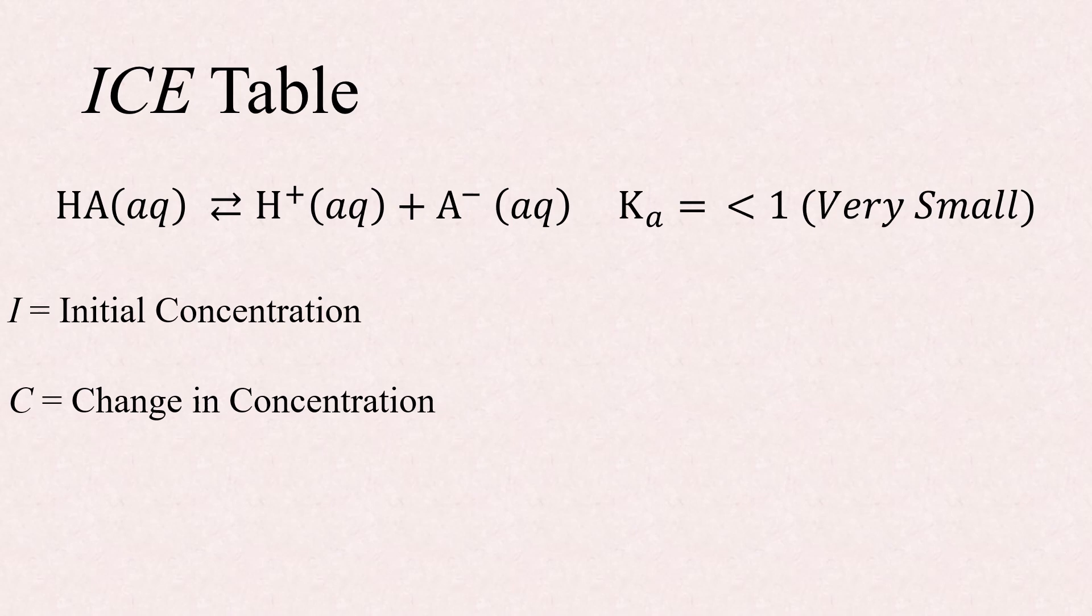C stands for the change in concentration. These entries will depend on the shift to reach equilibrium and how much of each species is gained or lost. And E stands for the equilibrium concentration.